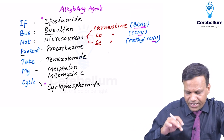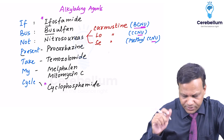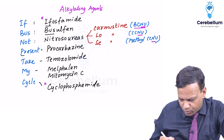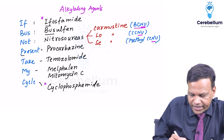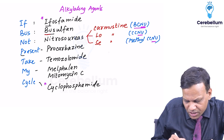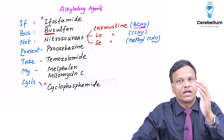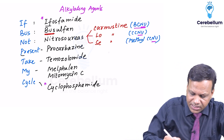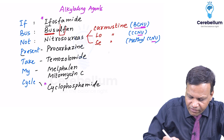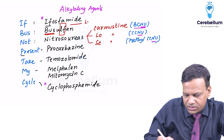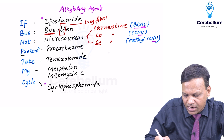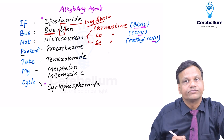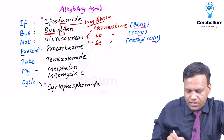Moving to the second drug, Busulfan: as already discussed, it causes pulmonary fibrosis. You can remember from its name — 'BuSulFan' contains 'LF' meaning Lung Fibrosis.